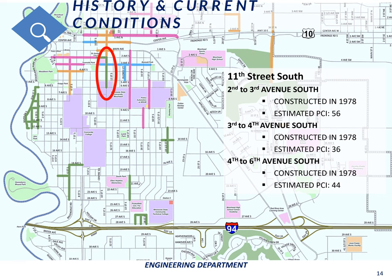The history of 11th Street South from 2nd Avenue South is that it was constructed as a concrete roadway in 1978, and there haven't been any street construction projects since then. Some minor maintenance work has been performed, including crack sealing and road patches where utility excavations have occurred. Other than that, the roadway hasn't had any work done on it.